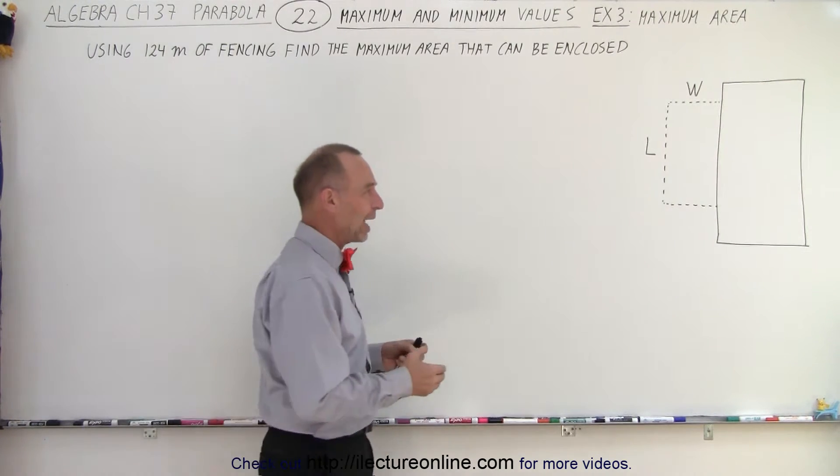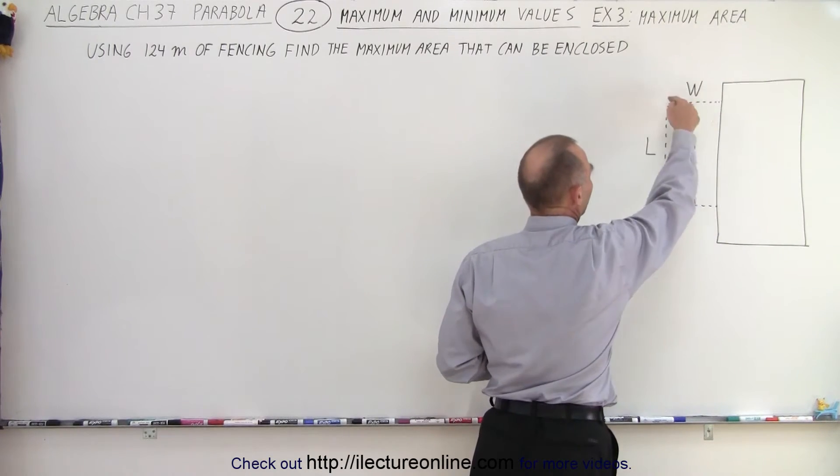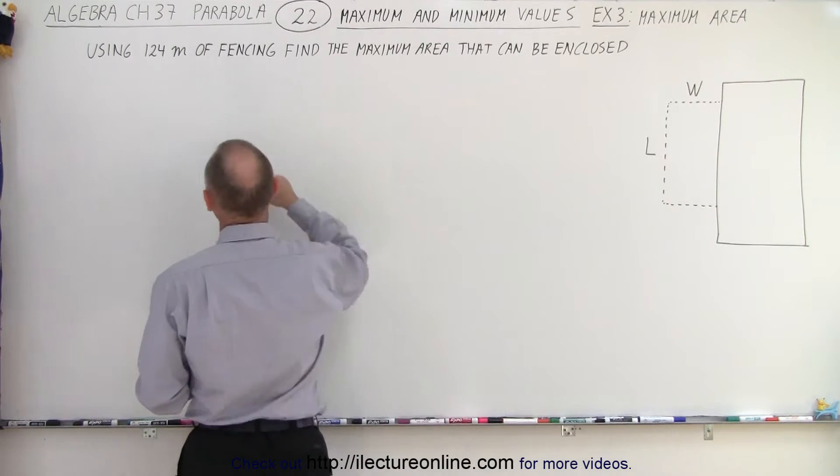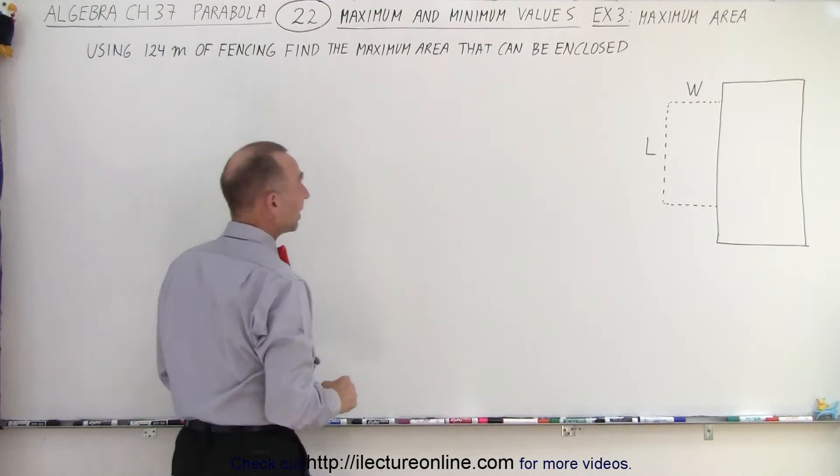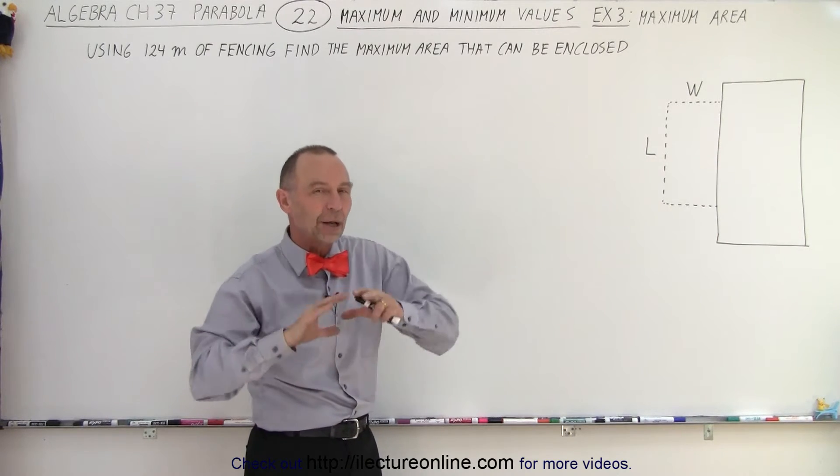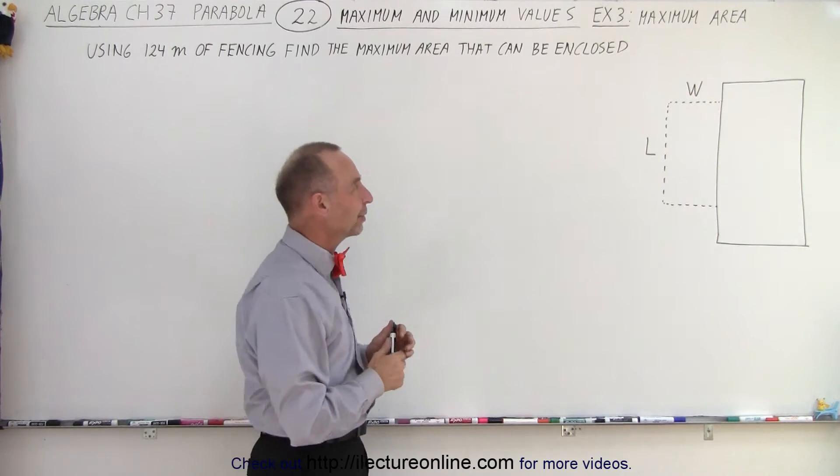What we have here is we have a building and we're trying to fence in an area next to the building. And we have 124 meters of fencing and we want to try to arrange the size in such a way that we have the maximum area enclosed.